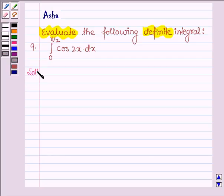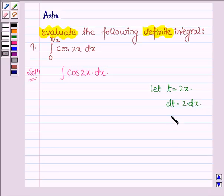Let's start with the solution and first find the value of integral cos 2x dx. Let t equal 2x. So dt equals 2 dx, or dx equals dt/2.